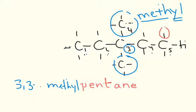And because there are two of them I will call it di. So now I have 3,3-dimethylpentane, which actually means that there are two methyl groups each attached to carbon 3.